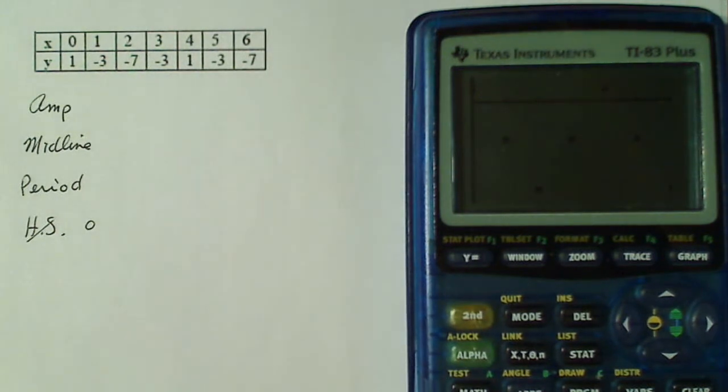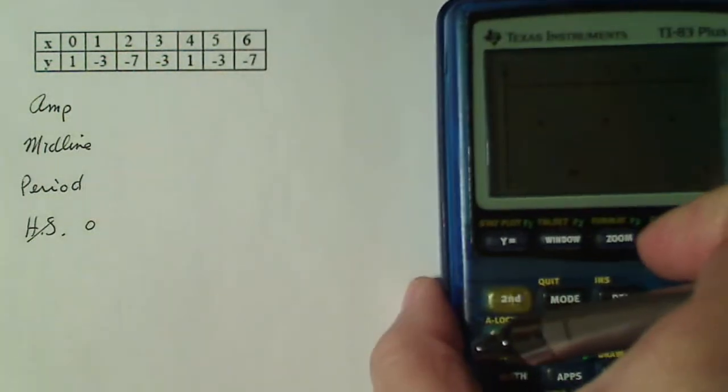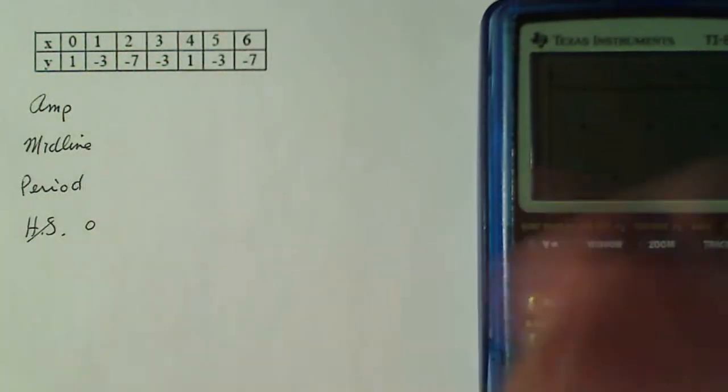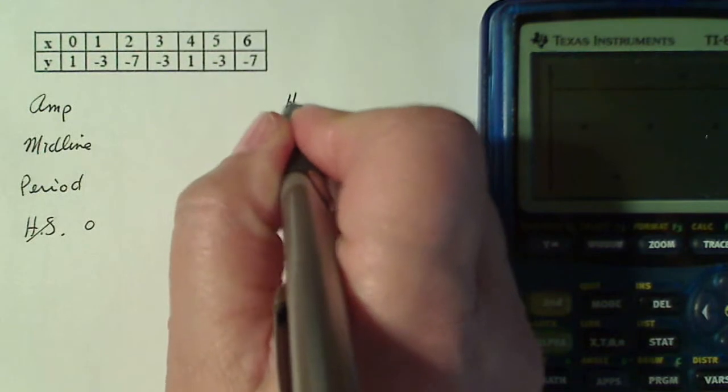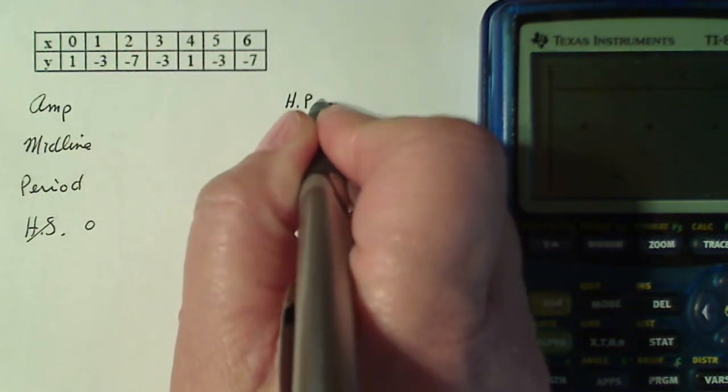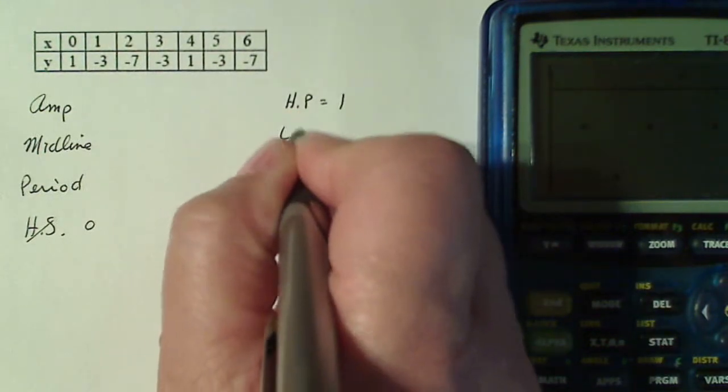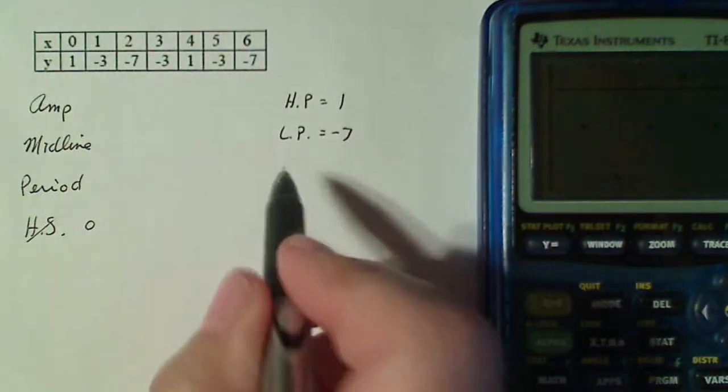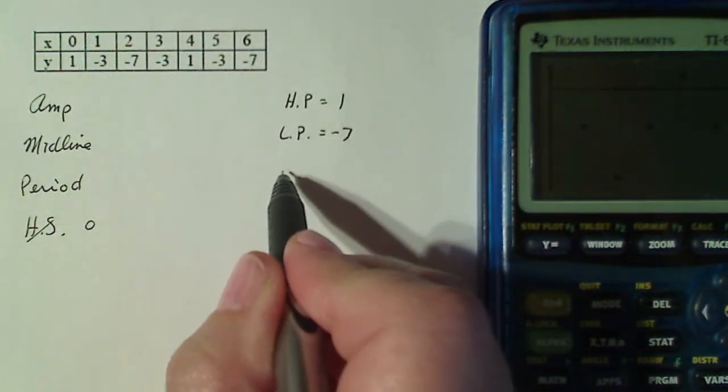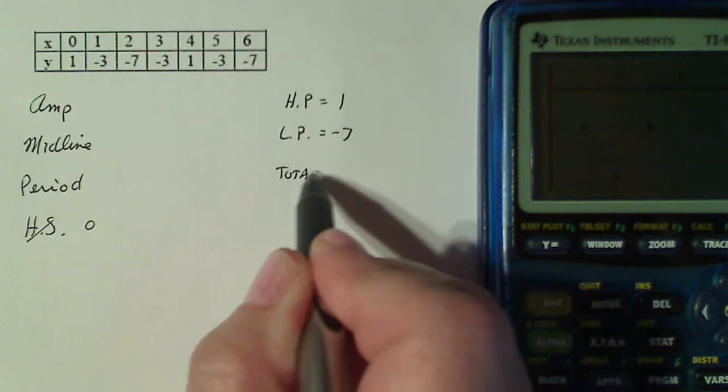Now my amplitude is the distance, half of the distance between the high and the low point. So if I think about what my high point is, my high point is one. My low point is minus seven.